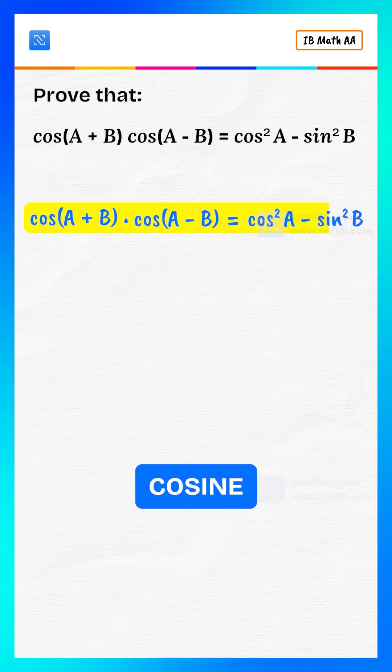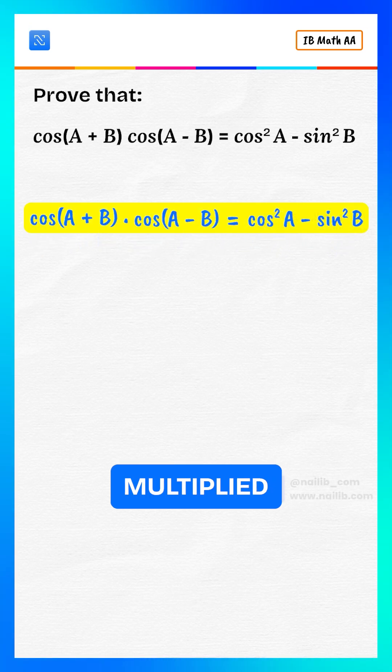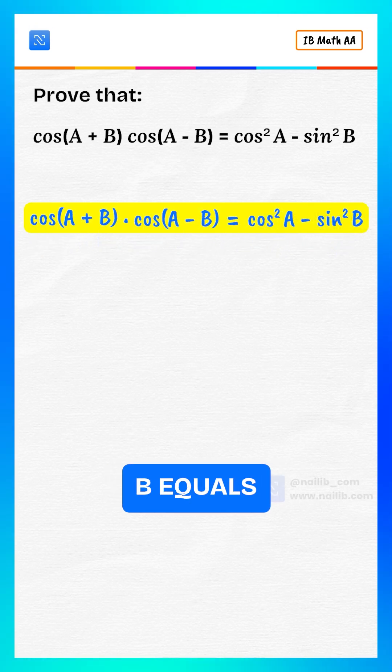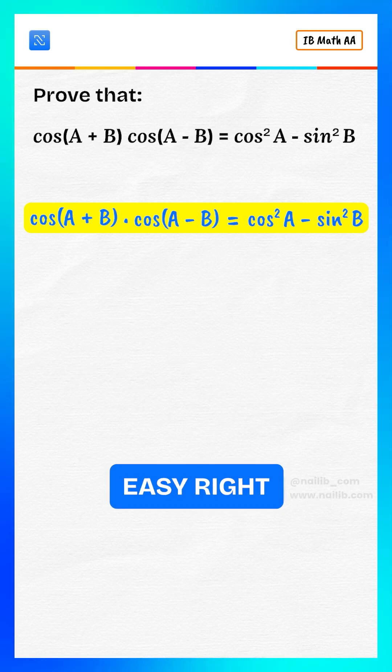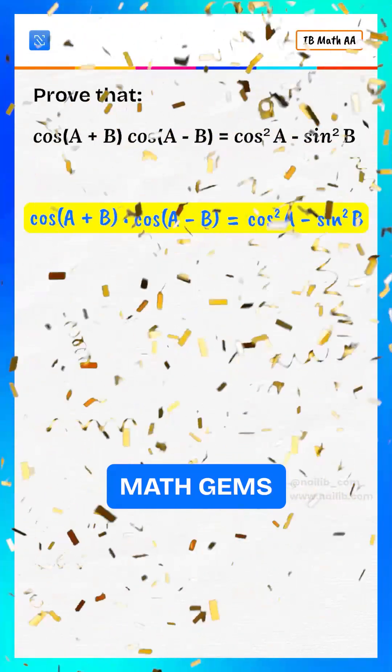Hence, cosine of A plus B multiplied by cosine of A minus B equals cosine squared A minus sine squared B. Easy, right? Hit follow for more math gems like this.